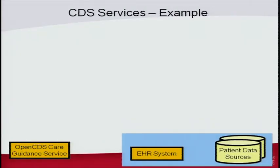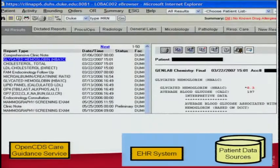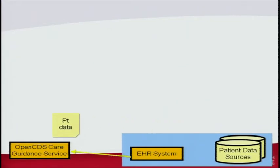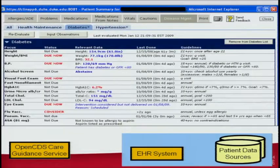Without getting into technical details, here's how this approach works. You have a given institution with an electronic health record system and their data sources, and then OpenCDS as a care guidance service. For example, this is the Duke electronic health record system: when a clinician clicks 'I want the disease summary for this patient,' patient data is collected and sent to the service over the web using standards. Then, using standards, care advice is generated and returned back to the system, enabling things like the disease management recommendation screen shown earlier.